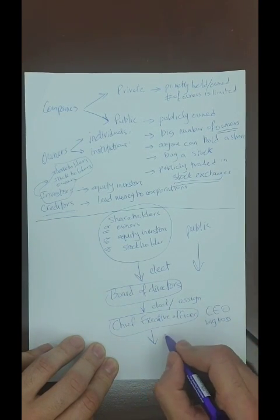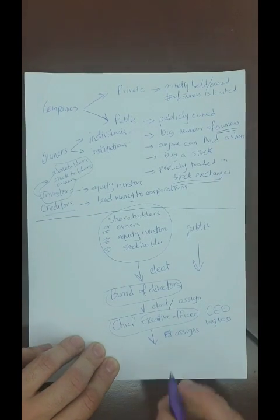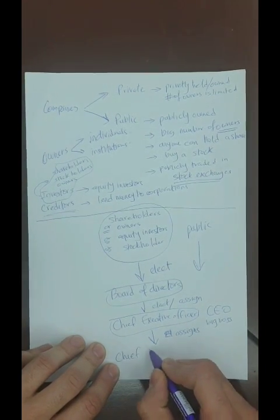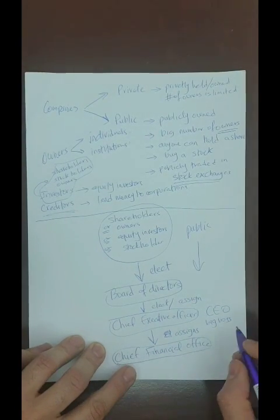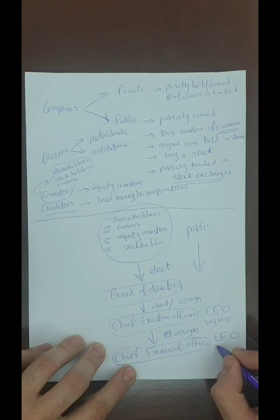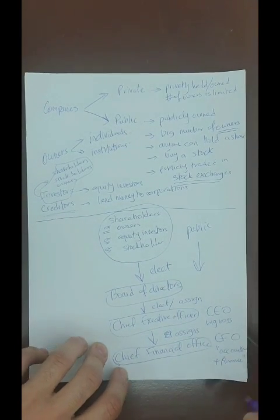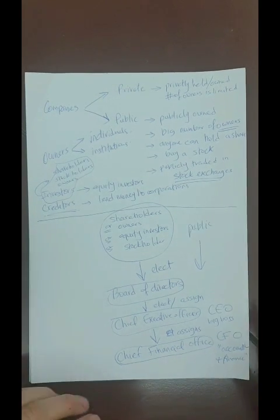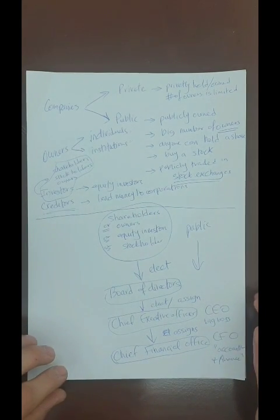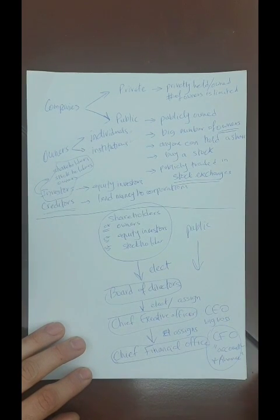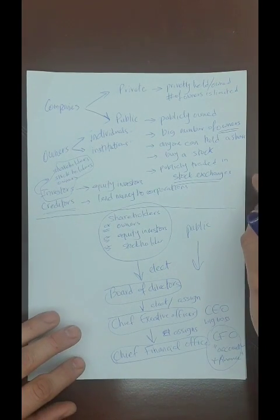The CEO, with the approval of the board, assigns the number two in the company: the Chief Financial Officer, or CFO. The CFO masters accounting and finance and is like the black box of the company — they know everything about the company's financial position, structure, and risks. For this person to be successful, they need to know accounting, and this is the importance of learning accounting in the business world.